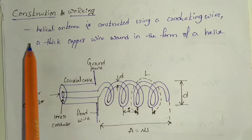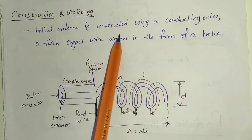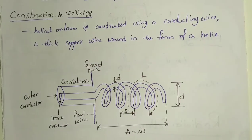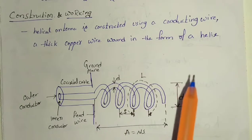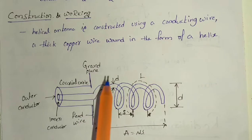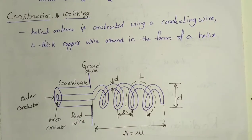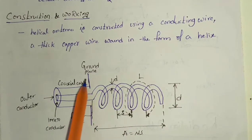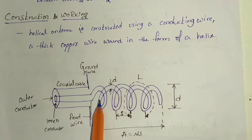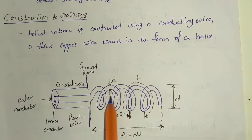Let's move on to the construction and working. Helical antenna is constructed by using conducting wire. A thick copper wire is wound in the form of a helix and it is used in conjunction with a metal plate. That metal plate is grounded. The copper wire is connected to the ground plate and it is wound in the form of a helix, and a coaxial cable is connected with the copper wire.